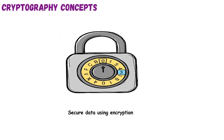Attackers aim to break cryptographic protections. Defenders rely on them to secure everything from passwords to transactions. Understanding cryptography is essential for ethical hacking. It's both a shield and a target — it's how digital trust is built and why cybersecurity professionals must master how it works, how it's used, and how it's attacked.